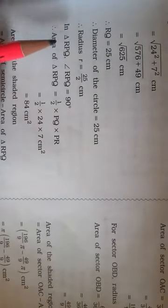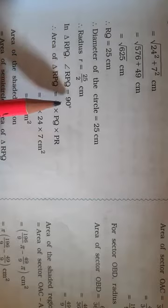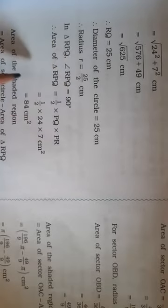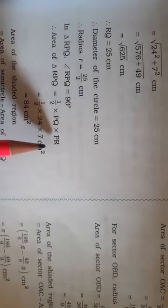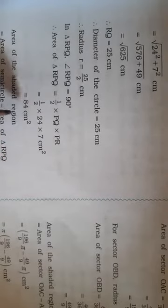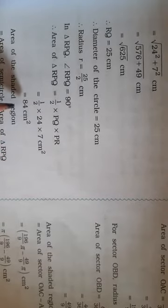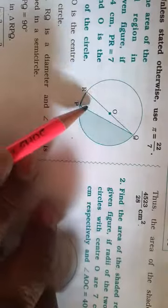Now for triangle RPQ with angle P = 90°, we find the area. Area of triangle RPQ = (1/2) × PQ × PR = (1/2) × 24 × 7 = 84 cm². Now to find the shaded region, we find the area of the semicircle first, then subtract.